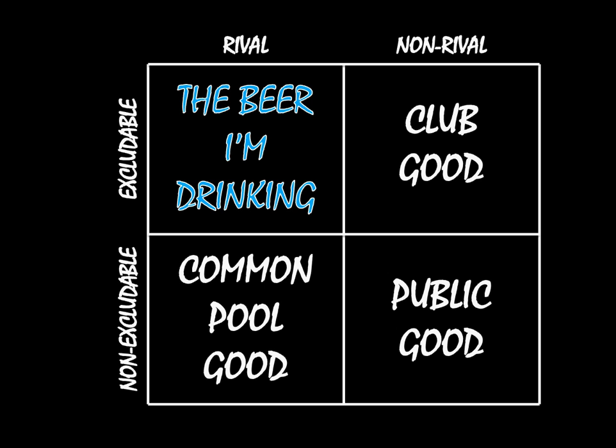Other rival-excludable goods are anything that you essentially buy at a grocery store. The clothes that you're wearing, those are rival-excludable, and the car you own — those are all rival-excludable goods.